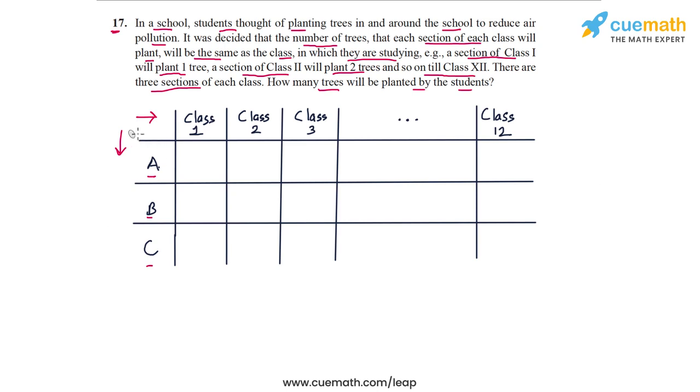Now we are told that every section of every class plants a certain number of trees equal to their class. For example, class 1 section A will plant one tree, class 1 section B will plant one tree, and class 1 section C will also plant one tree. Now class 2 section A will plant two trees. Similarly, class 2 section B will plant two trees, and class 2 section C will also plant two trees.